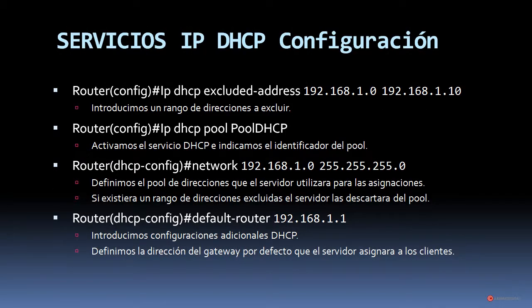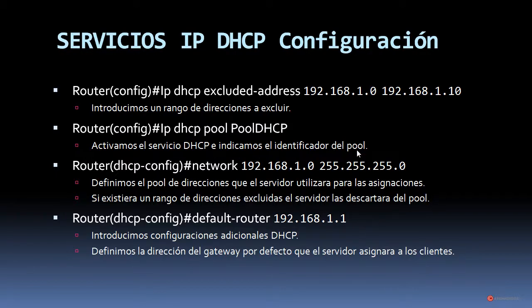En esta diapositiva vamos a repasar un ejemplo muy sencillo de configuración de DHCP en un router. Empezamos en ese modo de configuración con el comando IP DHCP excluded-address y el rango de direcciones que vamos a excluir. Con esto introducimos un rango de direcciones a excluir en las asignaciones del servidor DHCP. Luego continuamos con el comando IP DHCP pool y el identificador del pool, con lo que activamos el servicio DHCP e indicamos el identificador. Continuamos ya dentro del modo de configuración DHCP con el comando network, en este caso 192.168.1.0 y la máscara de su red, definiendo así el pool de direcciones que el servidor va a utilizar para asignar a los clientes.